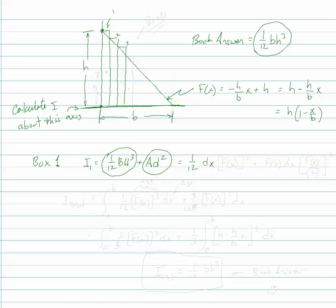These little boxes are DX wide, so that's my base. My height is going to be F of X cubed, okay, plus A. Well, A is just F of X times DX times D squared. Well, that's F of X over 2 squared, okay.